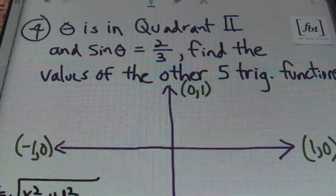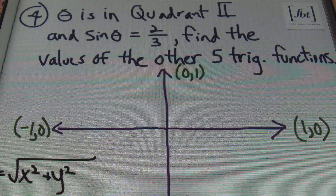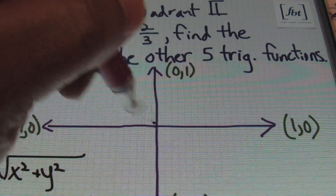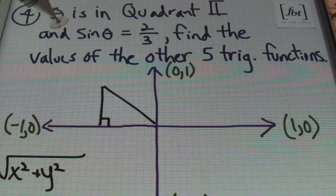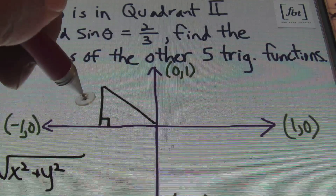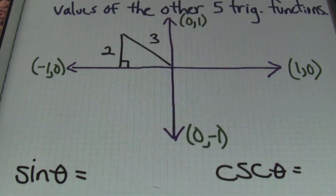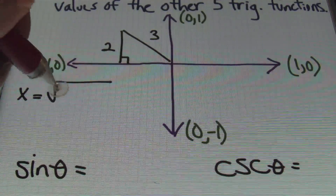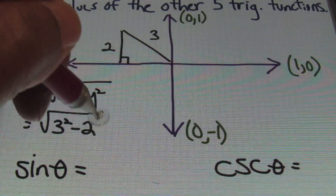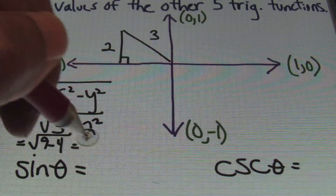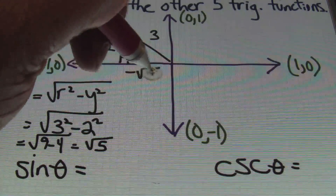In problem number 4, ladies and gentlemen, it says that theta is in quadrant 2, and sine theta equals to 2 thirds. They want us to find the values of the other five trig functions. So I'll go ahead and set up a right triangle in the second quadrant. I'm already given 2 out of the 3 values of this right triangle. Remembering that sine theta has a ratio of y over r, I know that my y value has to be positive 2, and my r value has to be positive 3. In order to find out what my x value is, I'll be using the Pythagorean Theorem: x equals to the square root of r squared minus y squared. Plugging in my values, I'll have 3 squared minus 2 squared, which gives me the square root of 9 minus 4, which gives me a result of the square root of 5. However, my value in the second quadrant for x has to be negative, so I'll end up writing down a negative square root of 5.